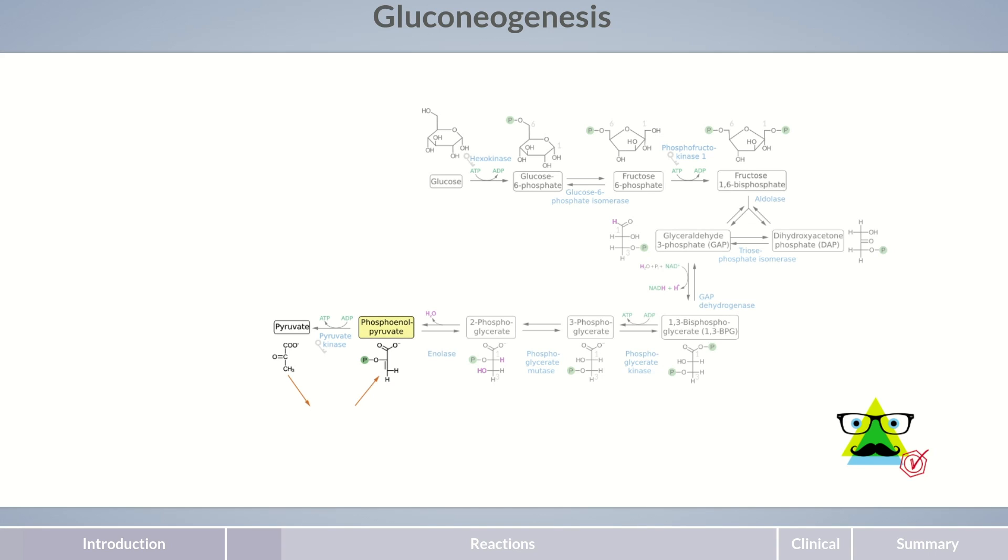Accordingly, gluconeogenesis requires a total of 11 reaction steps instead of the 10 in glycolysis. Phosphoenolpyruvate is a high-energy compound. This means it's unstable and easily loses its phosphate group. While the release of a large amount of energy during the formation of pyruvate from phosphoenolpyruvate is advantageous in glycolysis, the corresponding conversion represents an obstacle in gluconeogenesis.